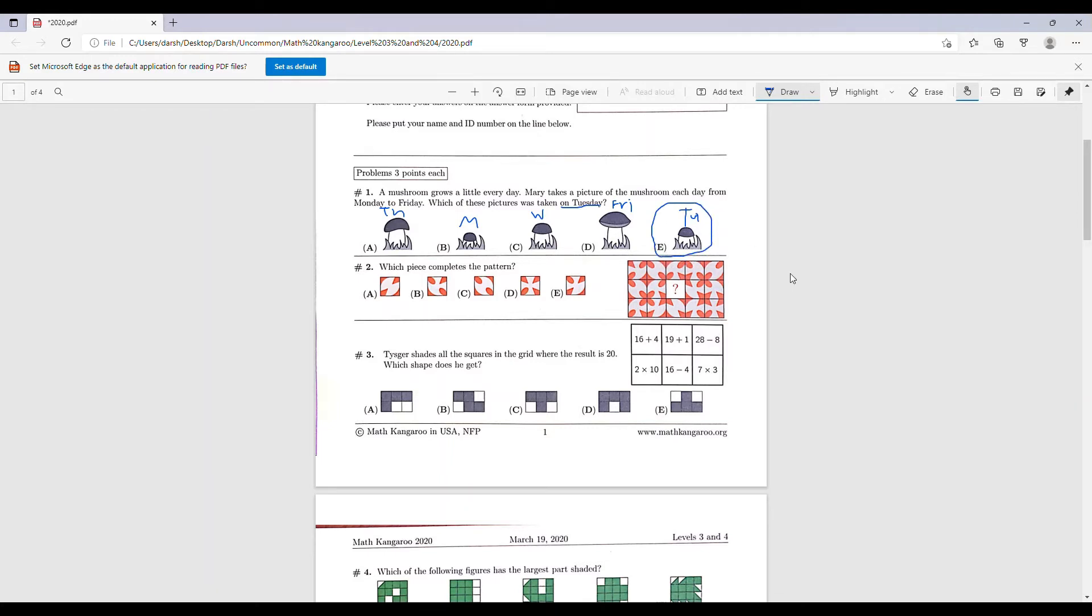Number two: which piece completes the pattern? If we want to complete this figure here, we're going to have a circle here, that was meant to be like an oval. Let's look which one of them has an oval in the top left corner. B and C do, and E does as well. So it can't be D, it can't be A. Next, on this one we know we're going to have another triangle.